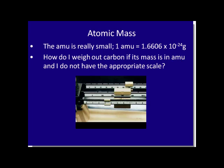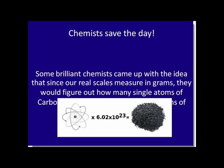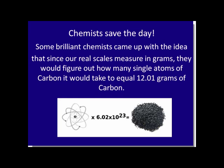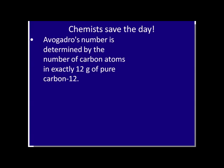So how do I weigh out carbon if its mass is in AMUs? And even if I convert from AMUs to grams, I still don't have the appropriate scale. Chemists save the day — some brilliant chemists came up with the idea that since our real scale measures grams, they would figure out how many single atoms of carbon it would take to equal 12.01 grams of carbon. This is referred to as Avogadro's number, determined by the number of carbon atoms in exactly 12 grams — approximately 12.01 AMUs — of pure carbon-12.